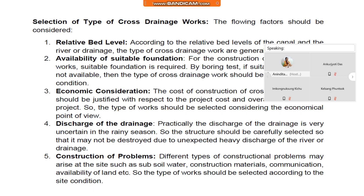Number four, discharge of the drainage. Practically, the discharge of the drainage is very uncertain in the rainy season. The structure should be carefully selected so that it may not be destroyed due to the unexpected heavy discharge of the river or drainage.